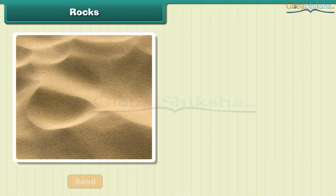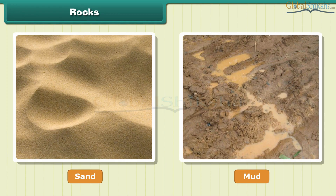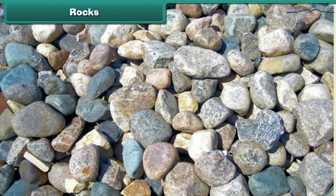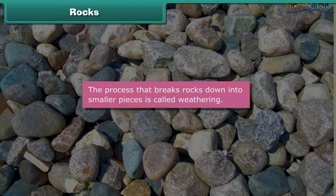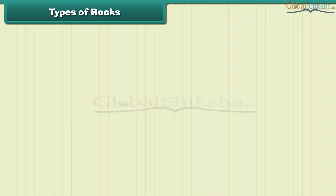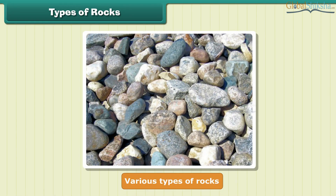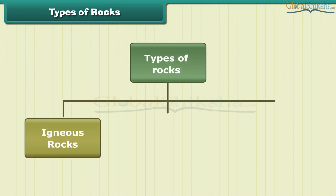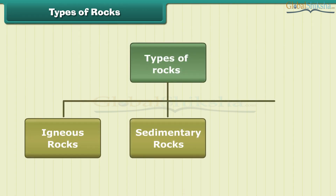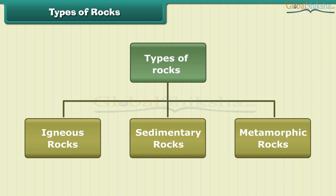Do you know sand and mud are also rocks? Rocks can be of different size and color. The process that breaks rocks down into smaller pieces is called weathering. We now know that the earth's crust is made up of various types of rocks. The three major types are igneous rocks, sedimentary rocks, and metamorphic rocks.